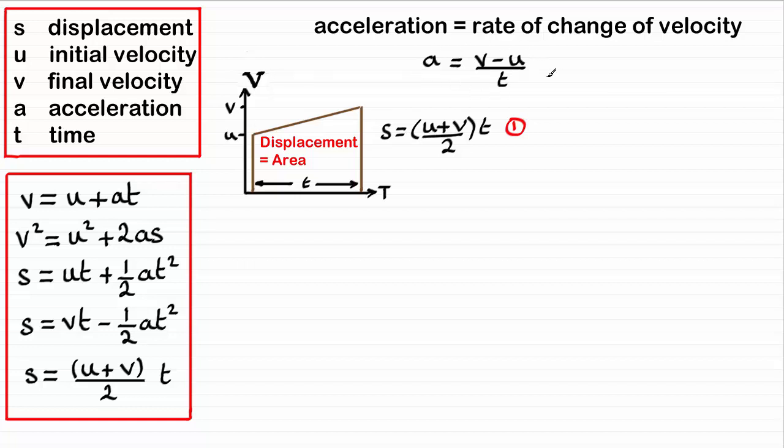Now this is a very important equation. If I was to rearrange it by multiplying both sides by t, I would end up with at equals v minus u. And then if I add u to both sides, I would end up making v the subject, which gives me v equals u plus at. And can you see that that equation here is this top one? I'm going to call that number two.